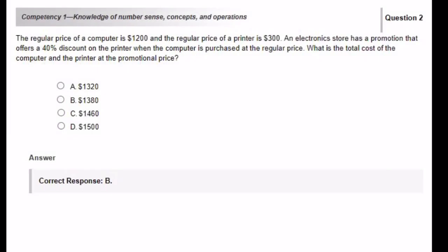The regular price of a computer is $1,200 and the regular price of a printer is $300. An electronics store has a promotion that offers a 40% discount on the printer when the computer is purchased at regular price. What is the total cost of the computer and the printer at the promotional price? In order to get the total cost, I need to add the price of the computer to the price of the printer, but I have to subtract the 40% off the price of the printer.